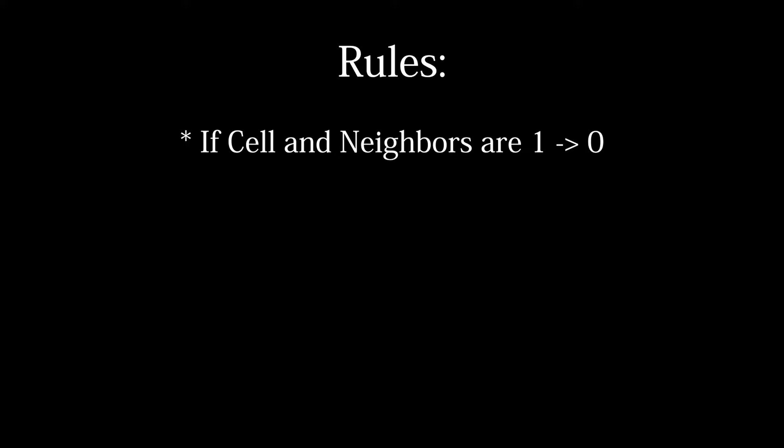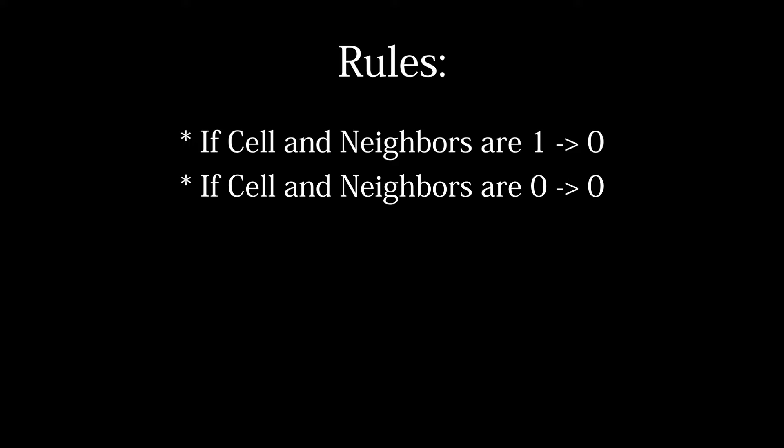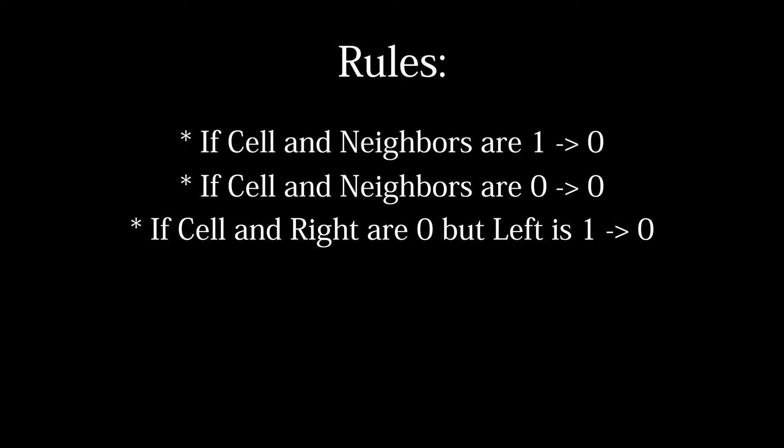To demonstrate, let's go through one generation of the one-dimensional automaton known as Rule 110. The rules are as follows: if the cell and both its neighbors are on, the cell turns off. If the cell and both its neighbors are off, it stays off. If the cell and its right side neighbor are off but its left side neighbor is on, the cell stays off. Otherwise, the cell turns on.